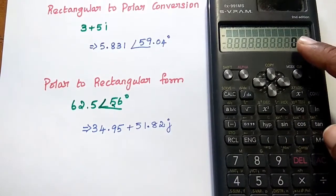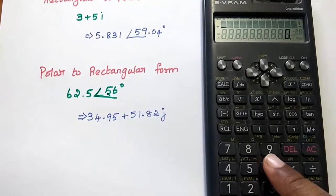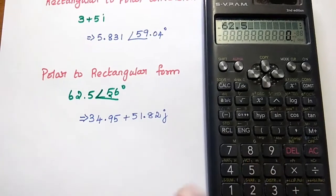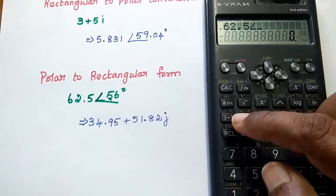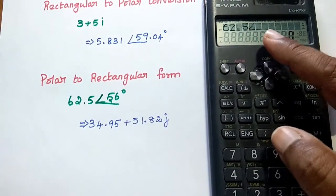Next we are going to give the polar form as is, that is 62.5. For getting this angle symbol, you can press SHIFT this hyphen. Shift, then hyphen, you can see this angle.